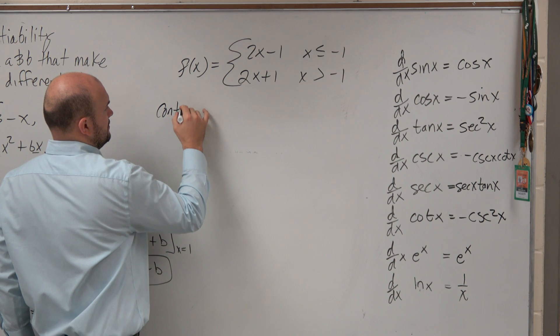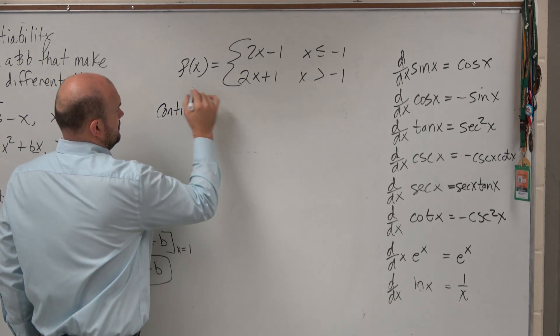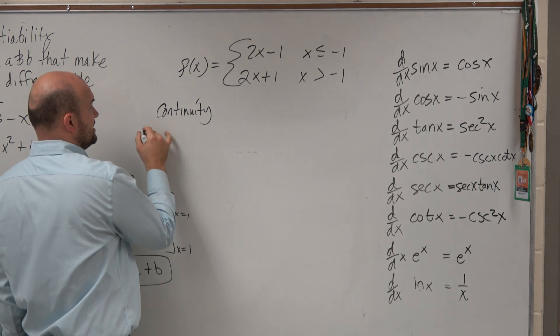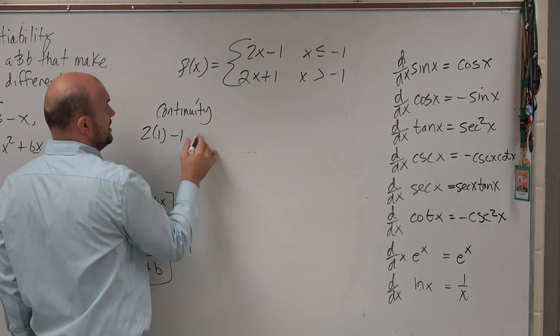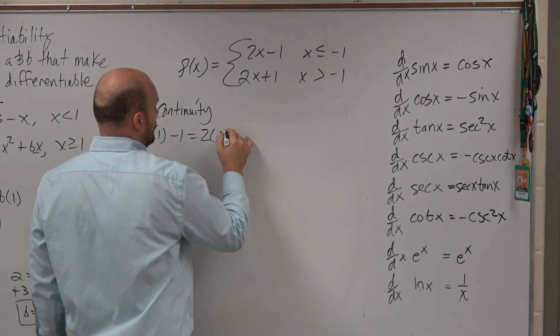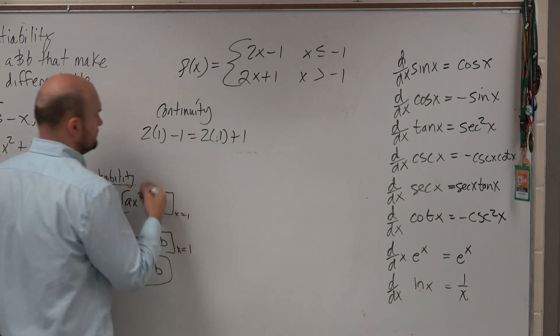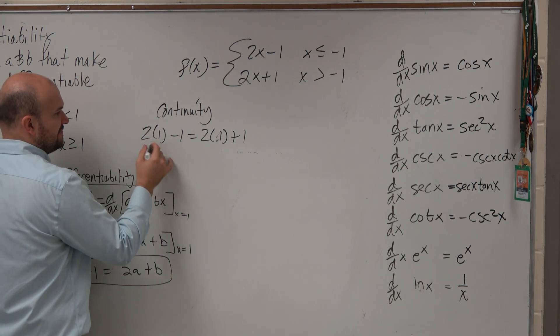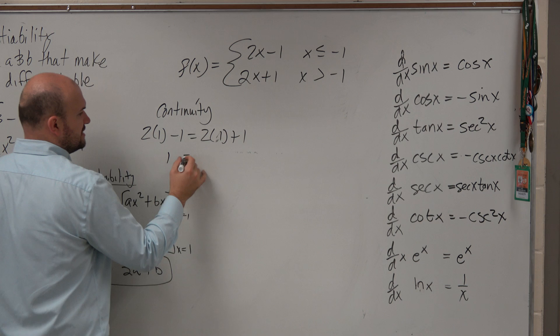So let's check continuity. At x equals 1, you want to say that 2 times 1 minus 1 has to equal 2 times 1 plus 1. So therefore, in this case, we have 2 minus 1 is 1, which equals 3.